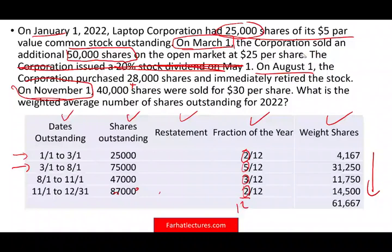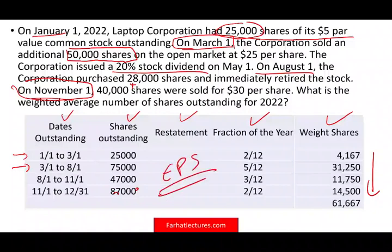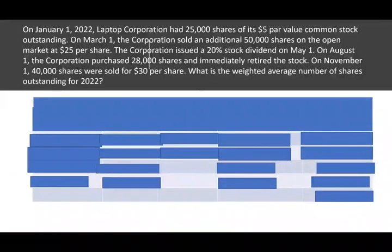Now let's go back to the original problem and include the 20% stock dividend issued on May 1st. Earnings per share is heavily covered in my intermediate accounting course, as this weighted average calculation is just one part of the broader EPS topic. When you read a problem with a stock dividend, anything that existed before the dividend date must be increased by 20% — you have to restate those shares.